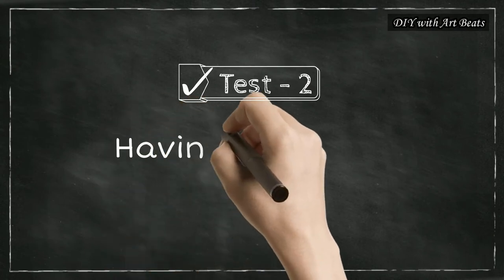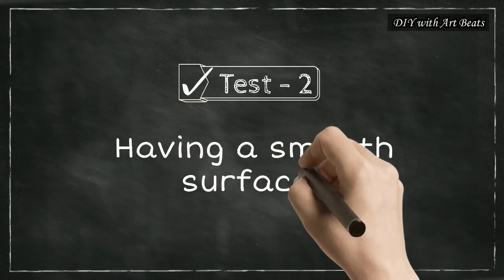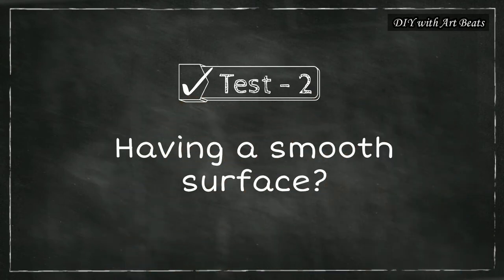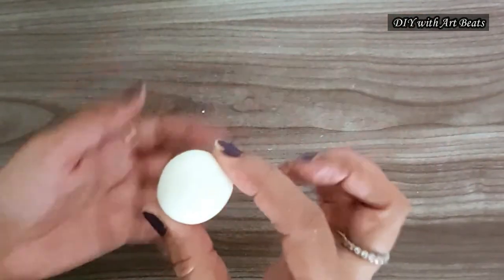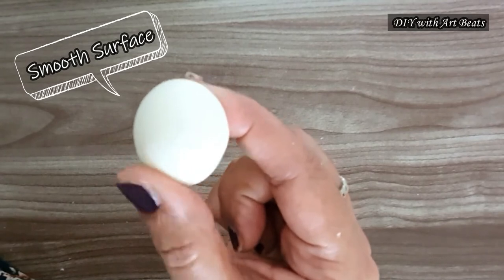Test number 2. It should have a smooth surface. Roll a piece of clay in a round shape. It should have a smooth surface like a ball.